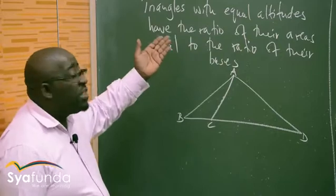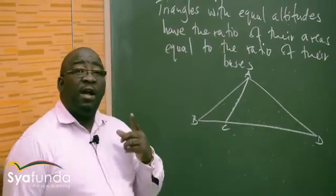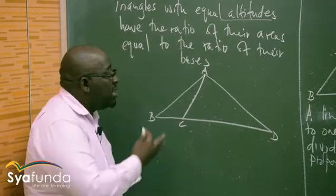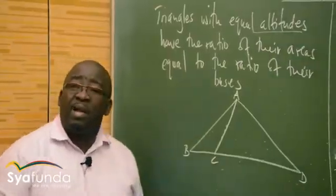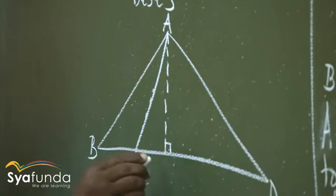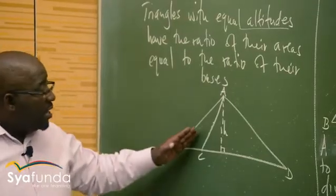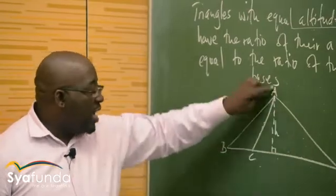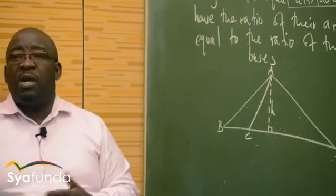For this theorem to work, both triangles must have the same perpendicular height — altitude. Let's create that perpendicular height. Let's say this is the perpendicular height H, where the two lines meet forming 90 degrees. The highest distance in triangle ABC is the same as the highest distance in triangle ACD. So both these triangles have the same altitude — the same perpendicular height.